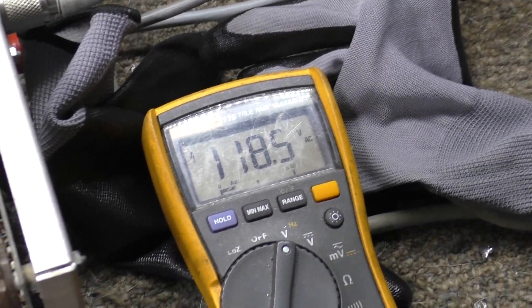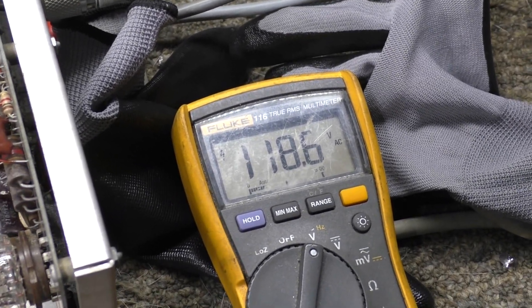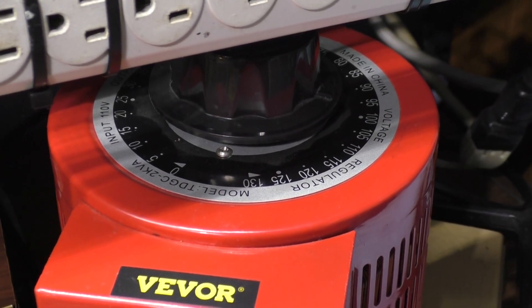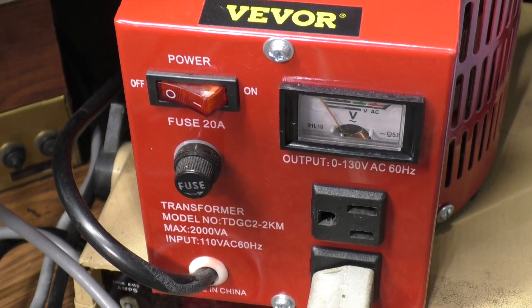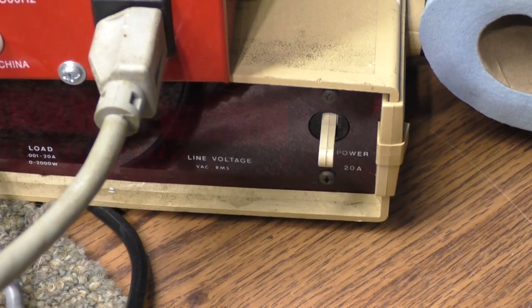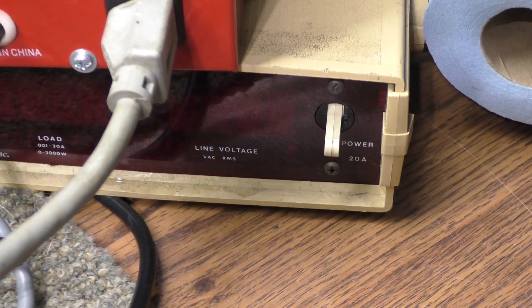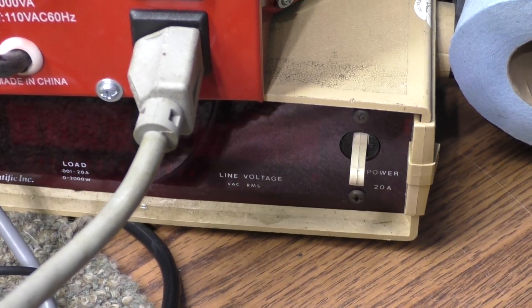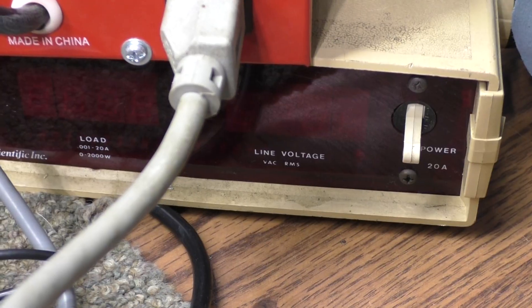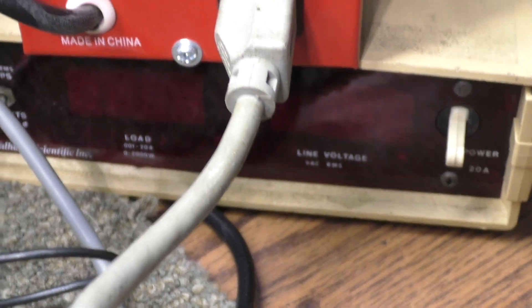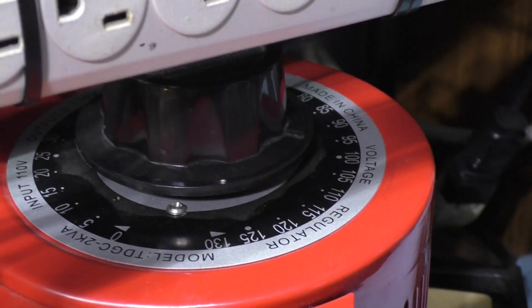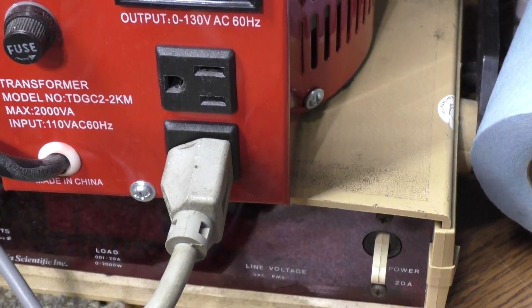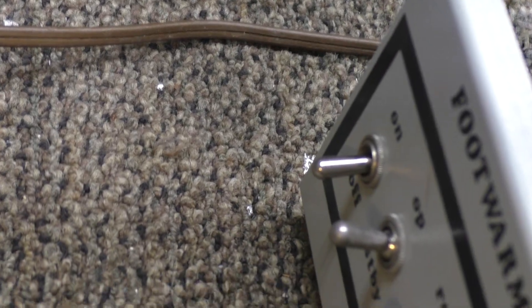So I powered it back off and turned the variac all the way back down, which it is now. The variac is turned off and a little switch box watt meter that goes to the variac. My AC comes in, goes to that switch box watt meter, that's off, into the variac, which is off. The variac is turned all the way off.